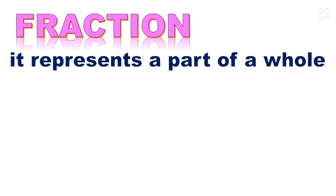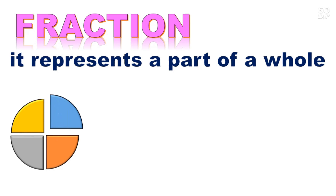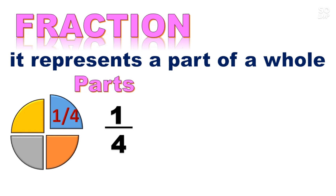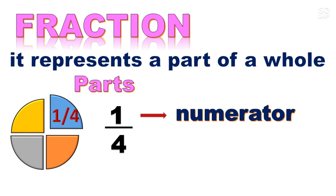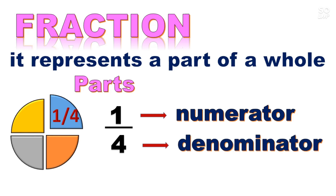So first, what is a fraction? A fraction represents a part of a whole. For example, in this circle, this part is 1 fourth — this is a part of a whole circle. We have the parts of a fraction: we have 1 over 4, or 1 fourth. The 1 is what we call the numerator, and 4 is what we call the denominator.